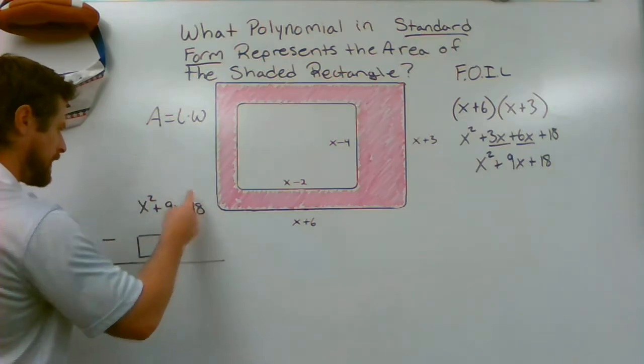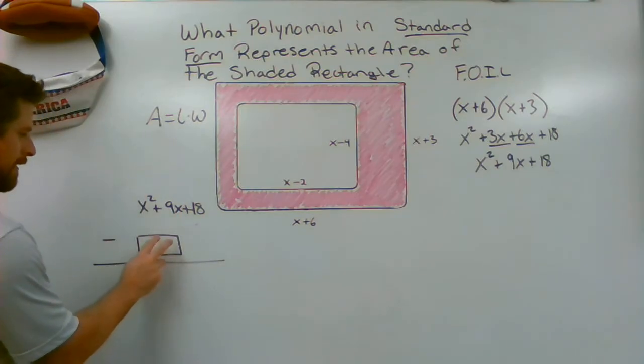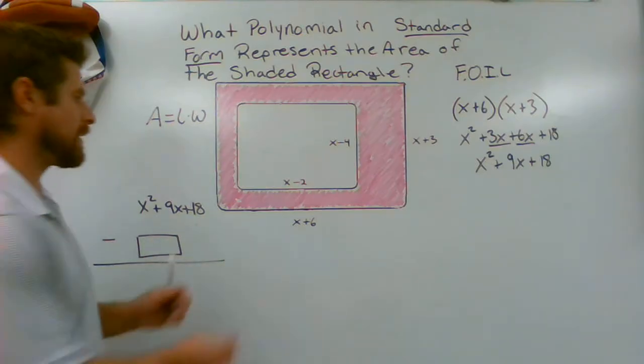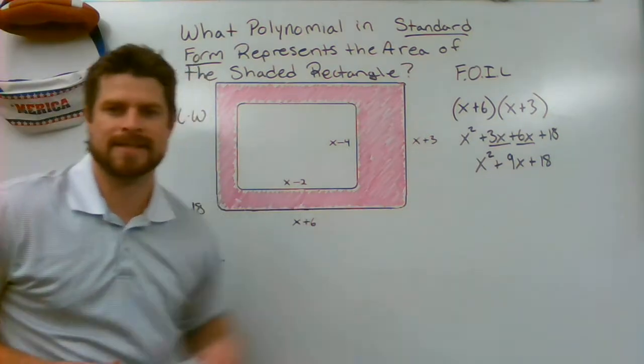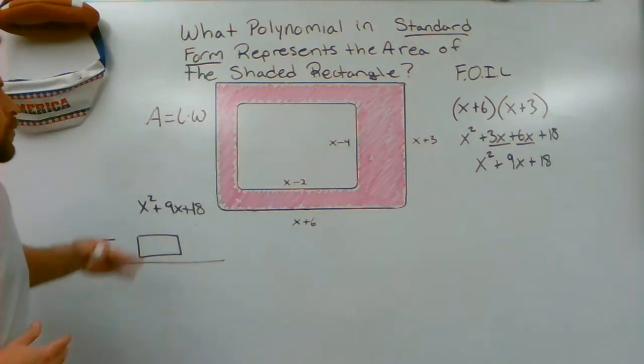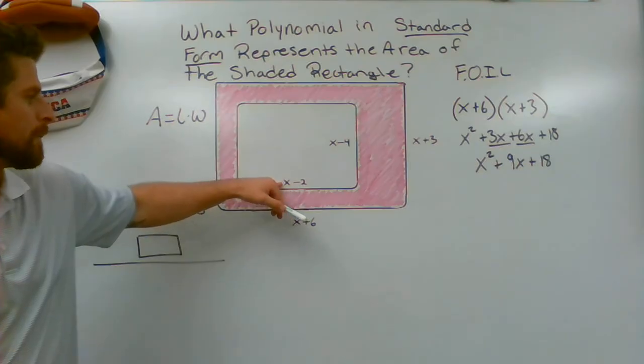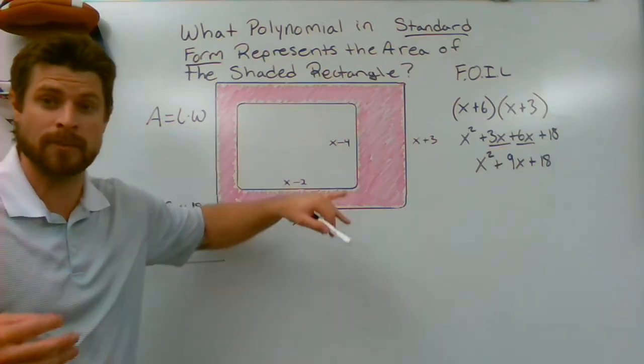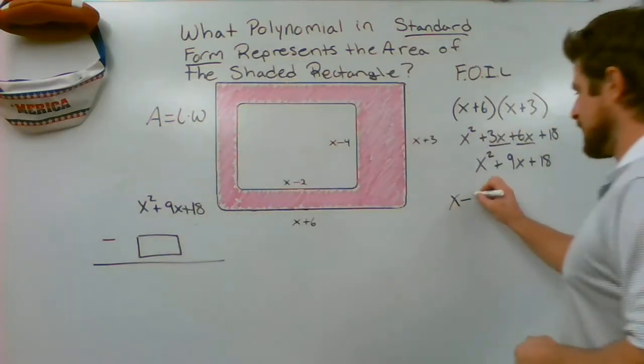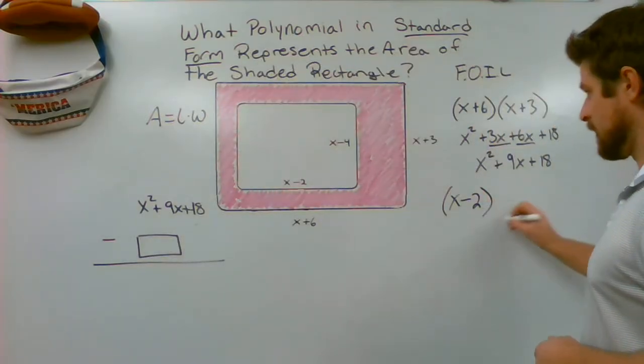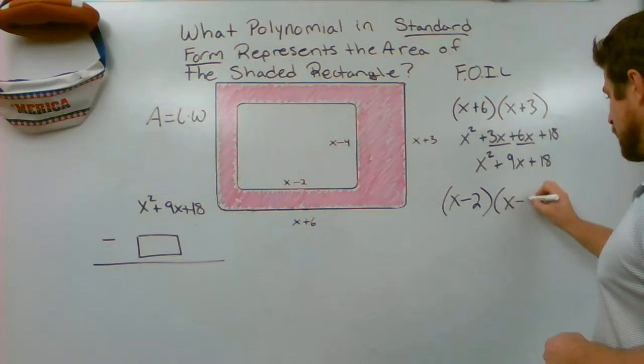I can then erase that. And remember, I need to subtract my area of my small rectangle. That will give me what's left over here in the shaded area. So I'm going to go back over here to this side of the problem where I'm going to write out my binomial times my binomial of the smaller rectangle. That's X minus 2 times X minus 4.